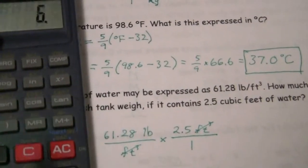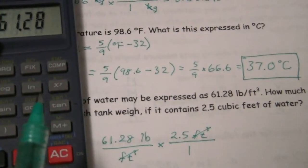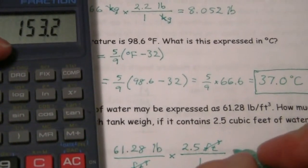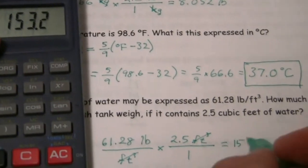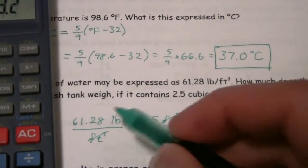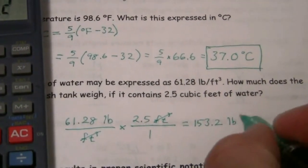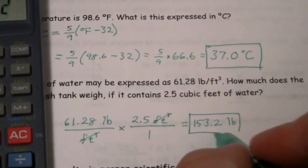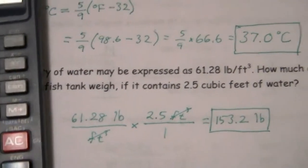So 61.28 times 2.5, and we have 153.2. And the units here are pounds. Very important to show your units always in calculations. Units and then, of course, we show our work in class.